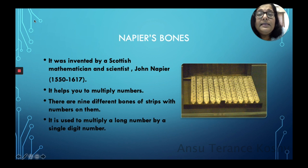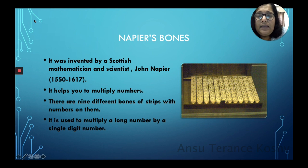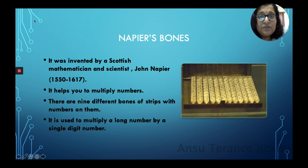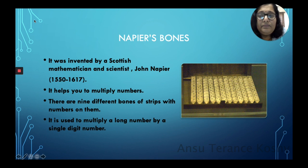Napier's bones was invented by Scottish mathematician and scientist John Napier, who lived between 1550 and 1617. It helps you to multiply numbers. While the abacus was used for addition, subtraction, multiplication and division, and the pascaline was only used for addition and subtraction, Napier's bones is used for multiplication. There are nine different bones or strips with numbers on them, used to multiply a long number by a single digit number.